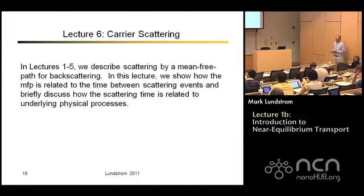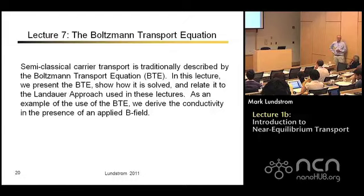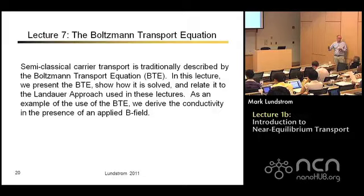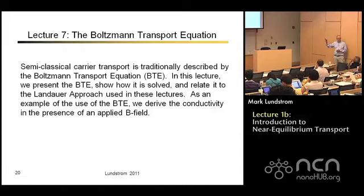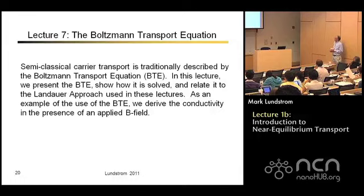The traditional way of treating these problems is to solve the Boltzmann transport equation. You should know what the Boltzmann transport equation is and how people solve it, and sometimes it's a more convenient way to solve a particular problem. It's especially useful for computing what happens when you apply a magnetic field for a Hall effect measurement. In the first half of that lecture I'll show how the results from solving the Boltzmann equation match results seen in previous lectures, and in the second half we'll add a magnetic field and derive the Hall effect — a very important near equilibrium transport problem.